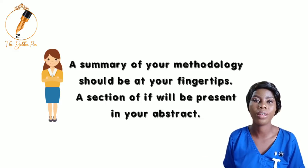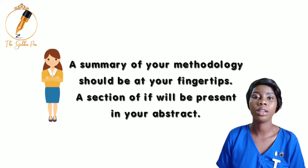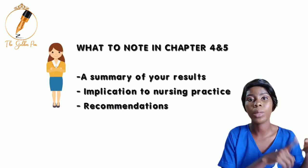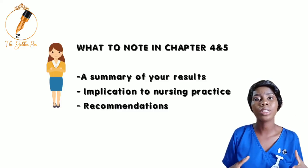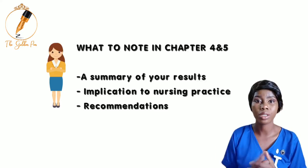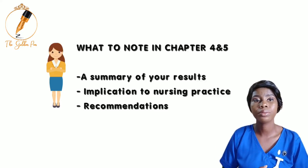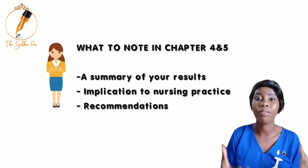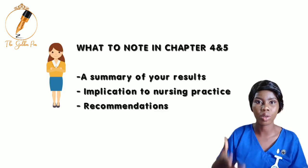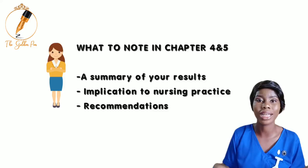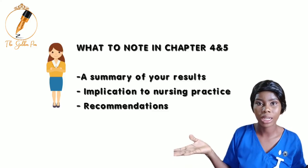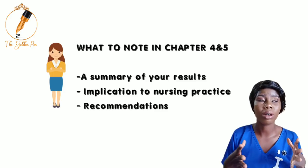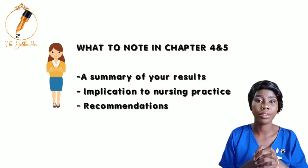Moving to Chapters Four and Five — what you need a good grasp of in Chapter Four is the summary of your results, which ties back to your abstract mentioned earlier because the abstract will obviously contain the summary of the results. So if the examiner asks 'after conducting the study, what did you find out? What did you arrive at?' — the examiner is asking for the summary of your results, and you should be able to give that flawlessly. You should be able to state all the things you arrived at at the end of the study.